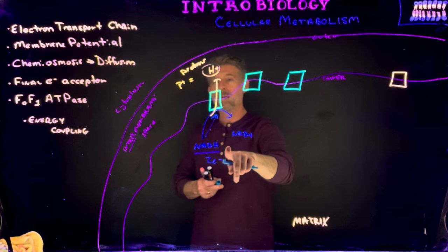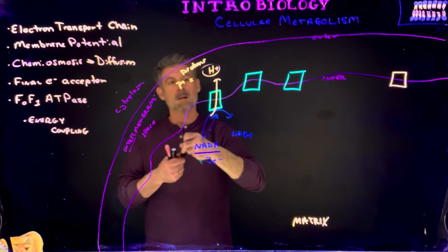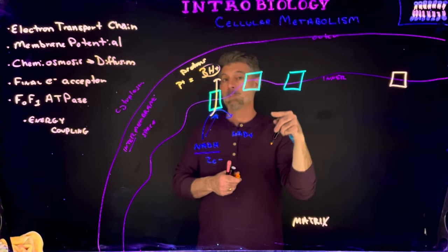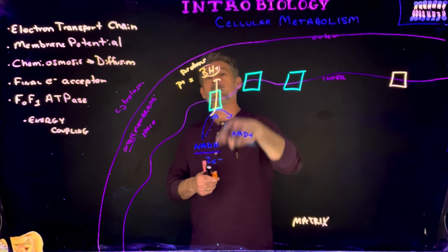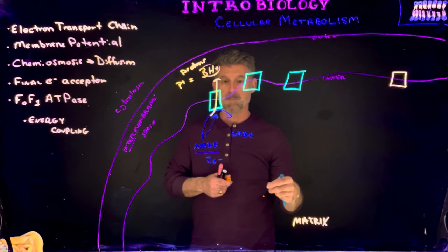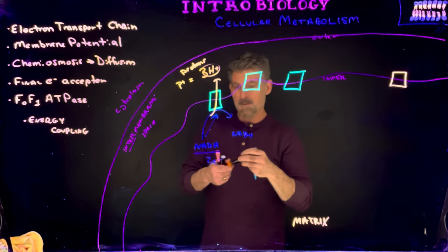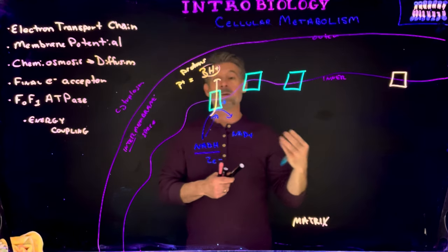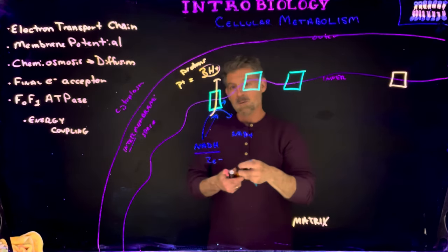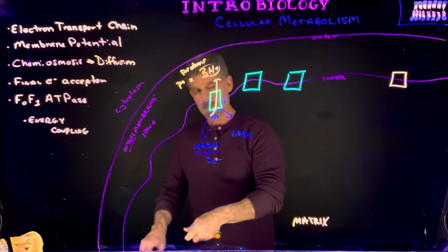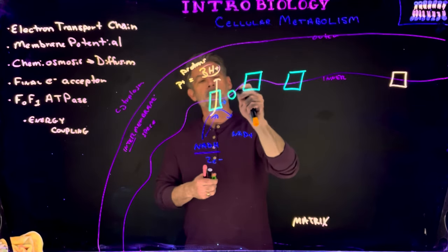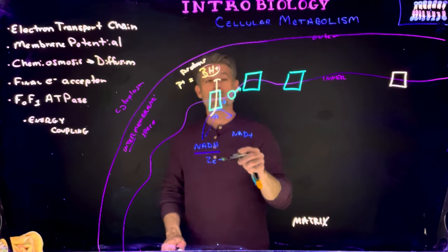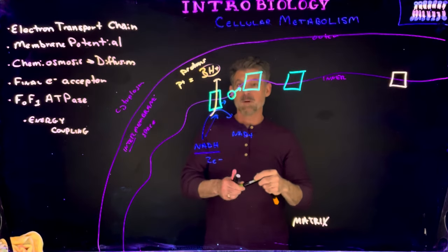So for every one NADH molecule, this particular protein—these green blocks representing membrane proteins—they're going to pump three protons across the membrane. But that's not the end of it. Those electrons are going to get passed along to something else. There's going to be another molecule in the middle here who's going to grab hold of the electrons and pass them along to another protein.